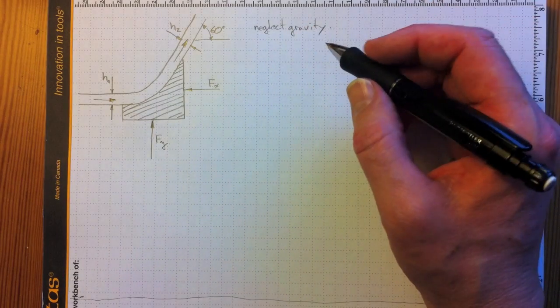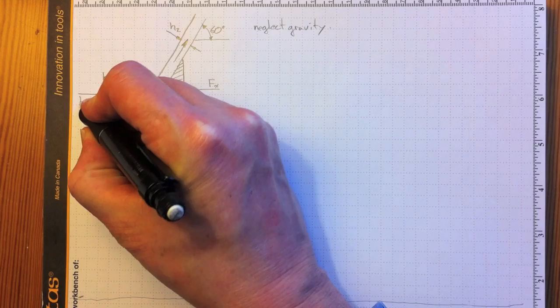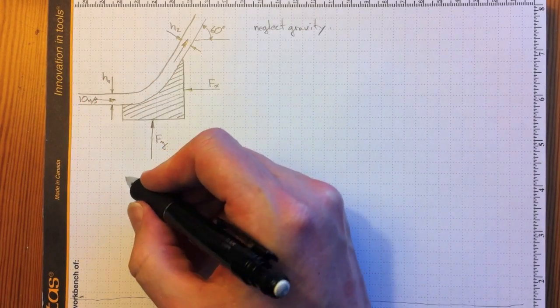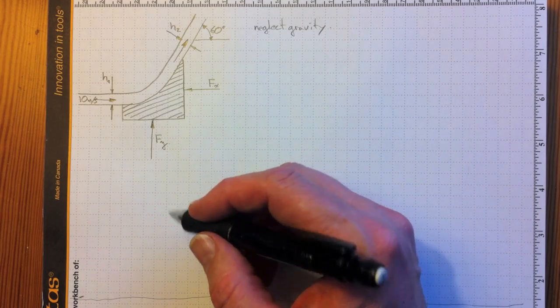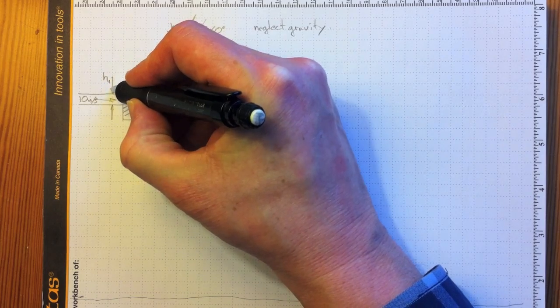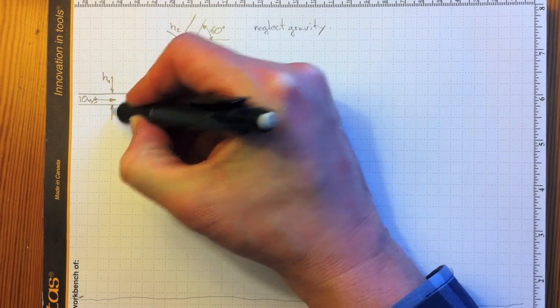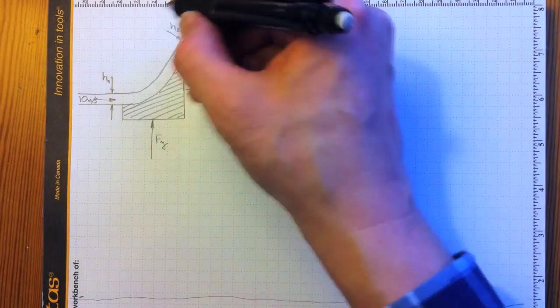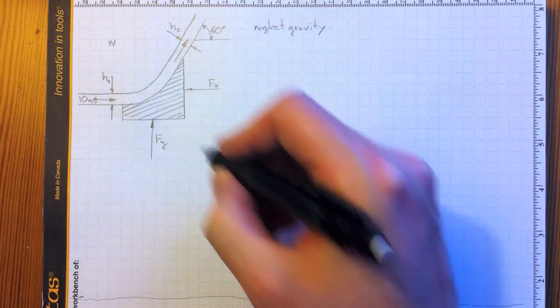And we need to know something about the flow. So we're told that the fluid's coming in here at 10 meters per second and at 1 kilogram per second. No, we don't know what the mass flow is. We do, however, know that we've got H1 here. That's the thickness of the sheet as it comes in here. And we'll assume that it's two-dimensional, so it extends off some distance, W, in this direction. So there's a width.